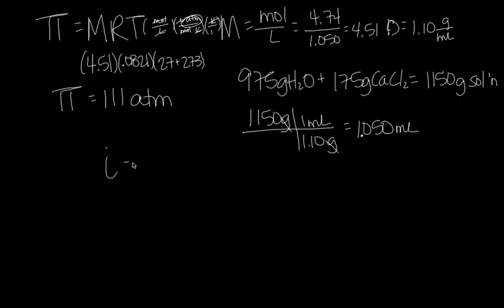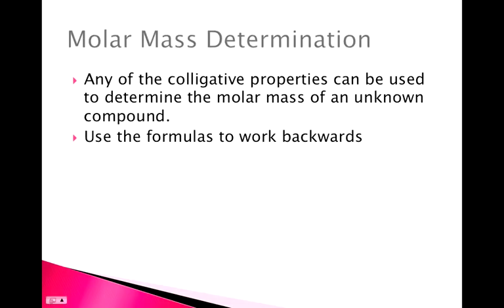Keep in mind that in all these calculations we assumed the van't Hoff factor is exactly 3. In reality it may behave as slightly less than 3, but for calculation purposes it's fine. The last thing we can do is use information from the lab to find the molar mass of an unknown compound — just use the formulas and work back to molar mass.